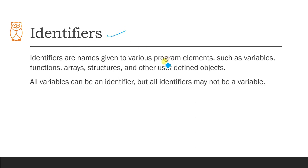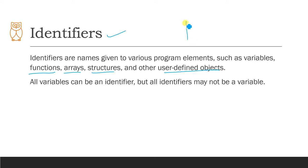Now let us understand what an identifier is. The English meaning of 'identifier' is to identify something. In a program there are several objects — functions, structures, unions, or user-defined objects — and all of them need to be identified with a name, following the same naming rules we discussed. Whenever you give a name to any object in your program, that name is called an identifier. Since every variable is also given a name, all variables are identifiers.